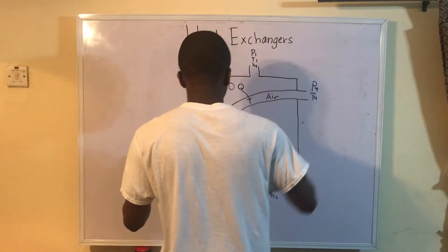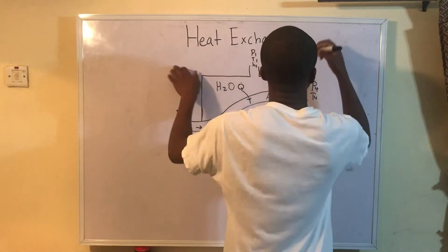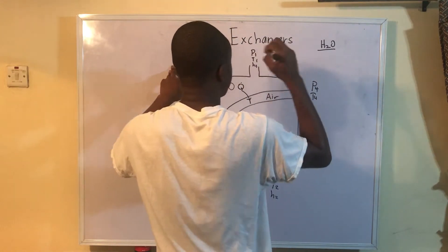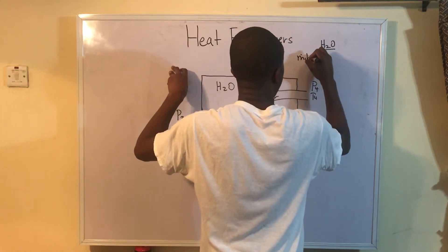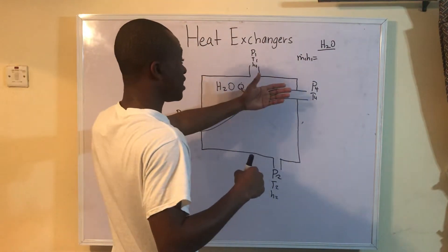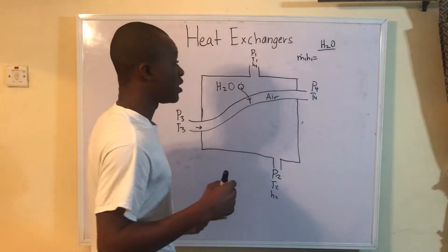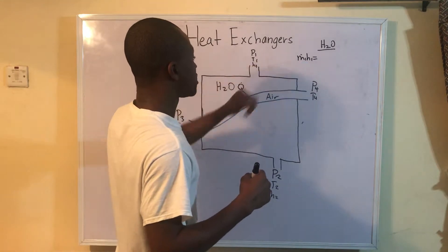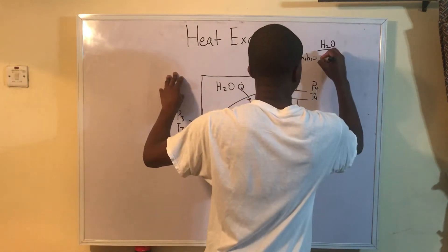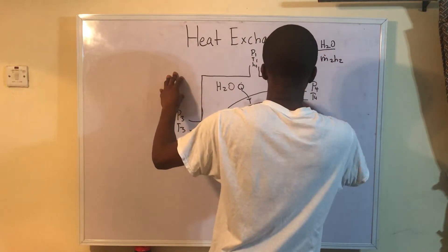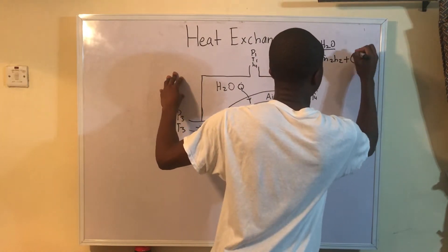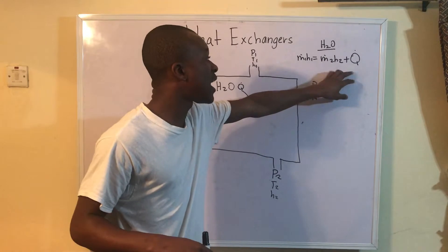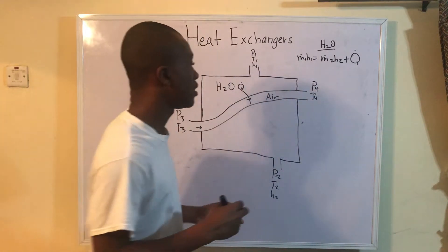First, let's look at what's happening with the water. From the perspective of H2O, we know that we have M dot 1 H1 — that's the only thing flowing in because there's no work and no heat change. Then we have M dot 2 H2 going out, and we also have this Q dot leaving. That Q dot out is on the right side of the equation.